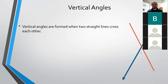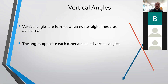Today we're just going to focus on one. I just have one of the parallel lines with the transversal. The angles opposite each other are called vertical angles — so this angle here and this angle here. You'll notice that they're vertical. This angle here and this angle here are also vertical angles, even though they're horizontal.